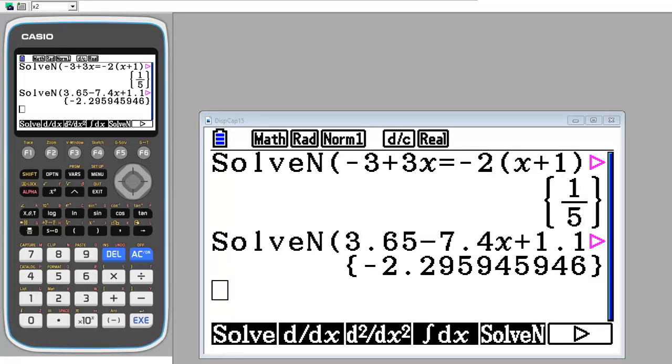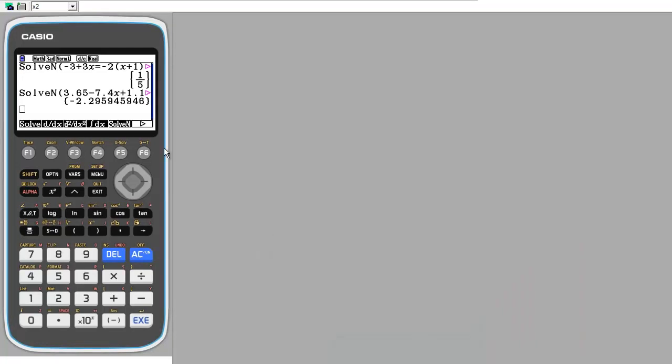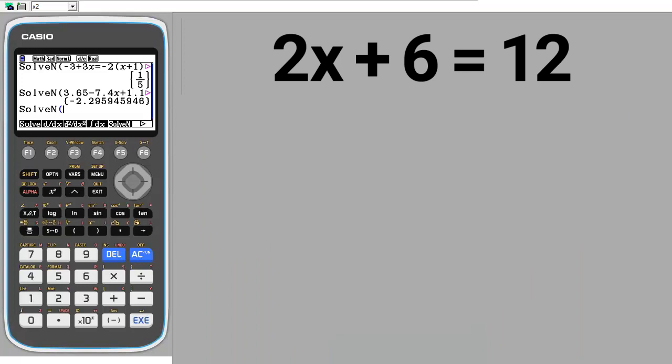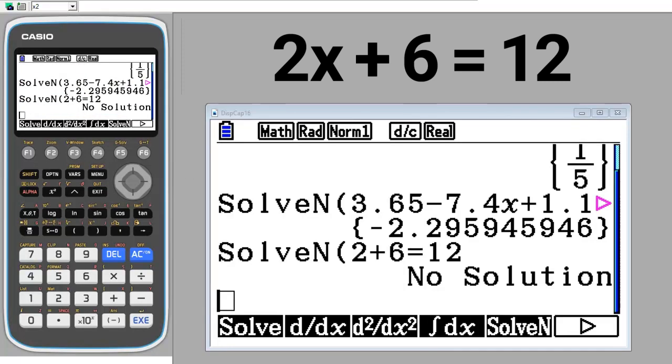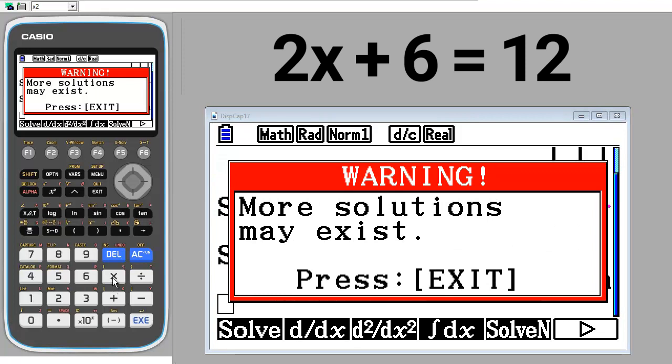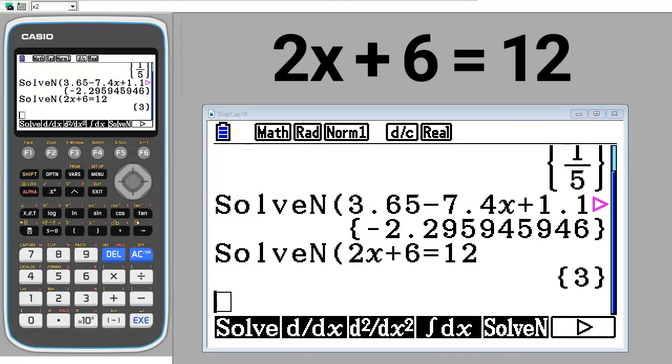Let's look at some possible error messages that you might see doing these type of problems. Press the F5 button to get the Solve In. I will enter this problem. Press the Exe button. If this red warning message pops up, don't worry about it. Press the Exit button to get rid of it. It says no solution. You have to look at your problem to make sure that you entered it correctly. Use the arrow buttons to go up to the problem. I did not enter the 2x correctly. I will enter the x. Press the Exe button. We get this red warning message again. Don't worry about it. Press the Exit button. There is the answer. X equals 3.